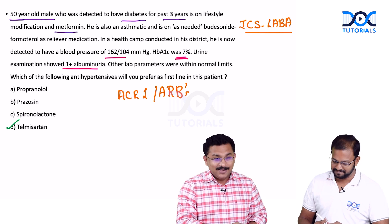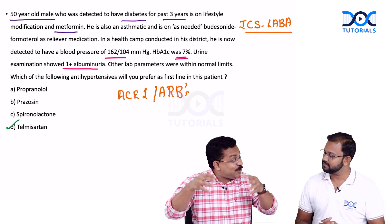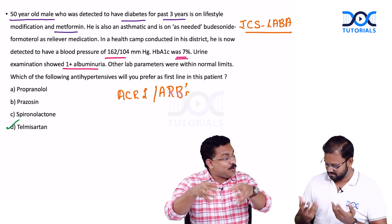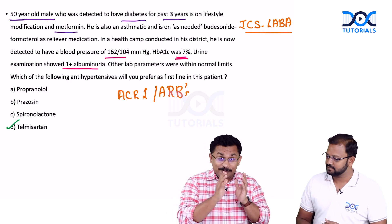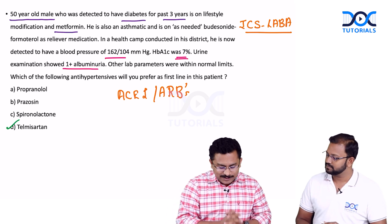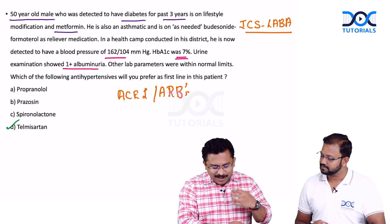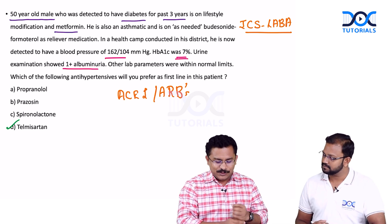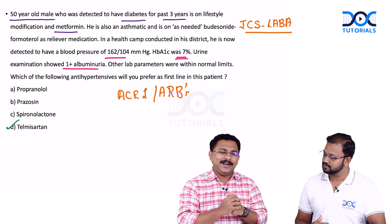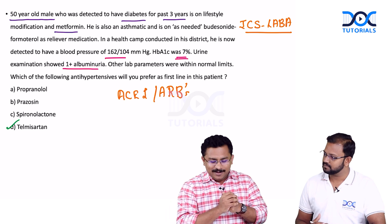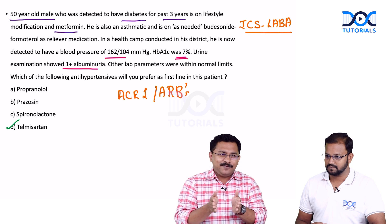Do not give ACE inhibitor and ARB together. There is no added advantage of combining both of them, and the answer for this question is telmisartan. When you think of other options, the answer is quite straightforward here. Regarding propranolol, the patient is also asthmatic and propranolol is a beta blocker, so it can cause bronchospasm and exacerbation of bronchospasm.